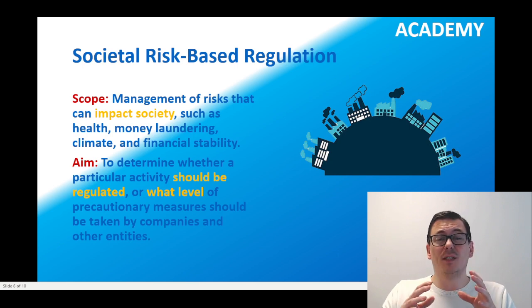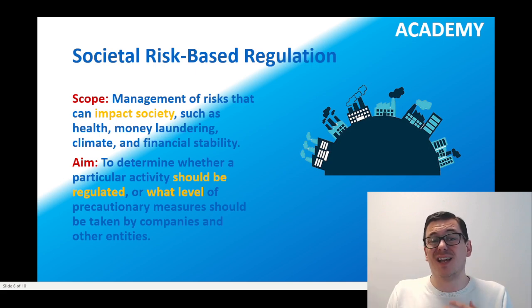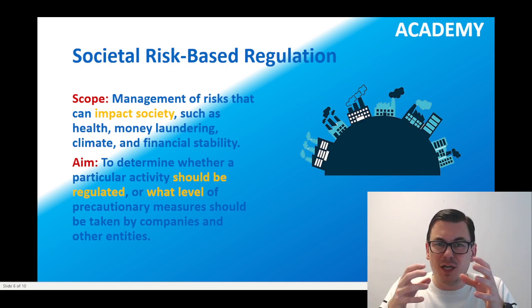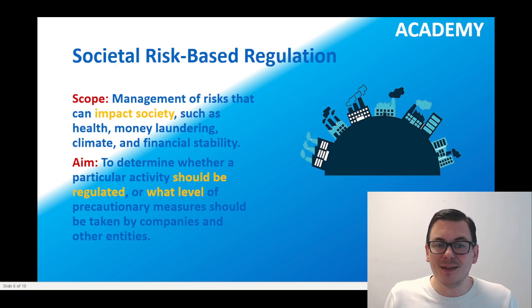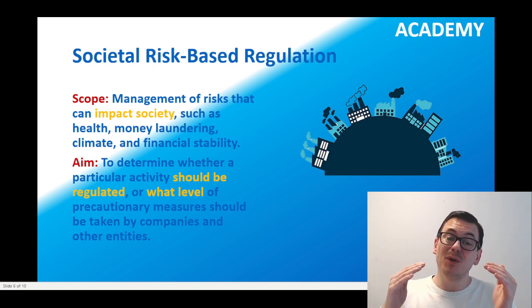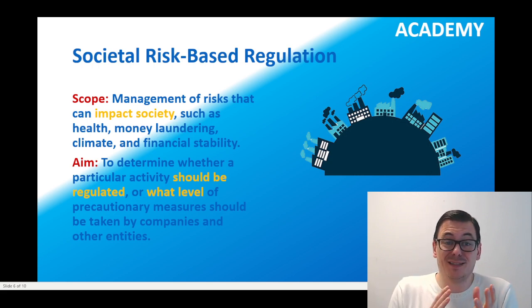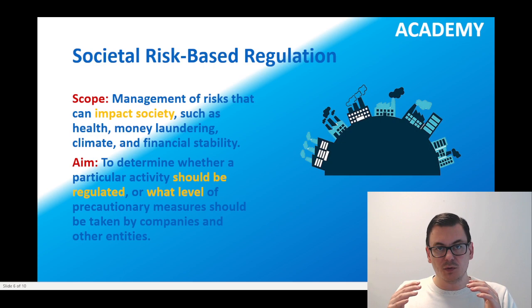Starting with societal risk-based regulation — I divide it into scope and aim. The scope is the management of risks that can impact societies, such as health, money laundering, climate, and financial stability. The aim is to determine whether a particular activity should be regulated or not, and at which level precautionary measures should be in place and who should be taking these — whether public authorities, private companies, etc. So societal risk-based regulation is essentially managing the risks to which society is exposed.